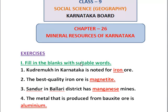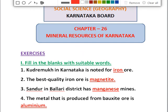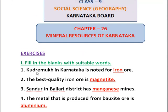Let's start with the fill in the blanks. The first fill in the blank: Kudremukh in Karnataka is noted for — iron ore deposits. As discussed in the explanation section, there are iron ore deposits in Kudremukh. The best quality of iron ore is — magnetite. We have two types of iron ore: magnetite and hematite. Magnetite is of high grade and accounts for 63 percent of the iron ore in Karnataka.